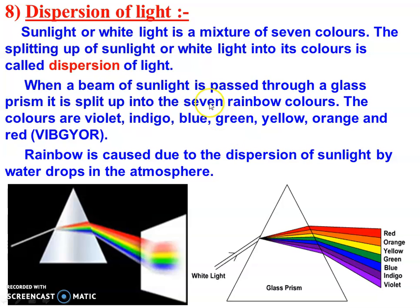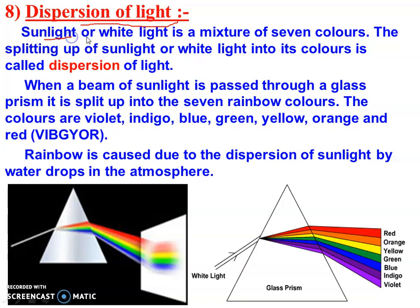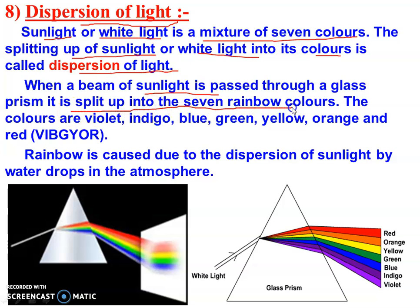Now, this is dispersion of light. When sunlight falls on a prism, it splits into its component colors — seven colors: red, orange, yellow, green, blue, indigo, and violet. This splitting of light into seven colors is called dispersion of light. Sunlight, or white light, is a mixture of seven colors. When a beam of white light is passed through a glass prism, it is split up into seven rainbow colors.